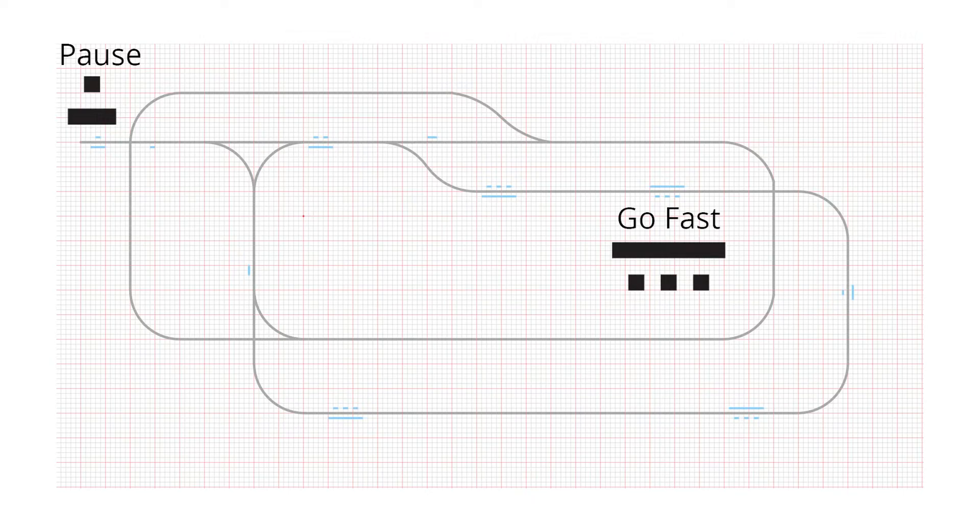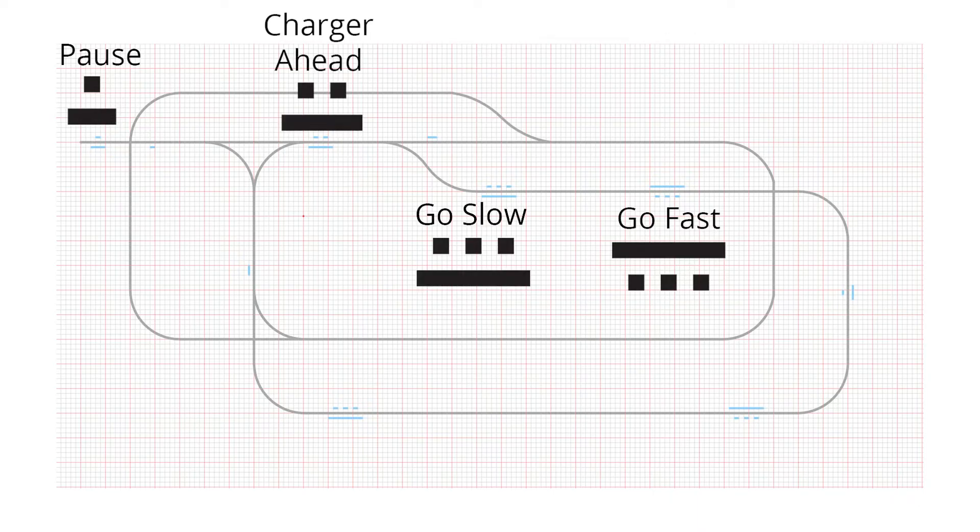This marker signals a go-fast area. This is the resume speed marker. This marker indicates that a charging station is straight after the fork.